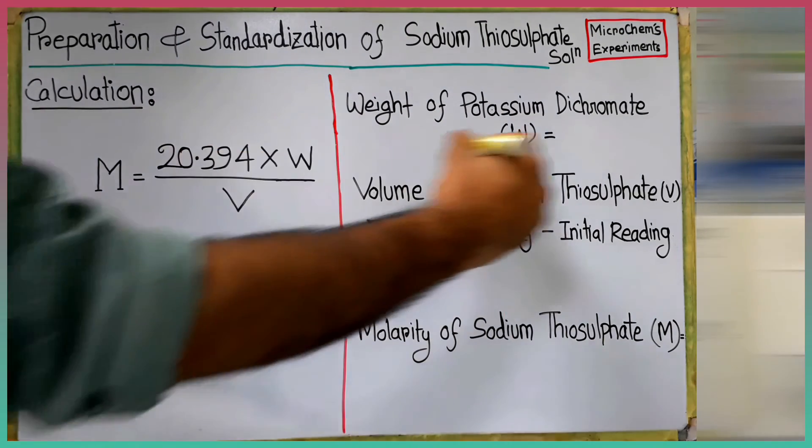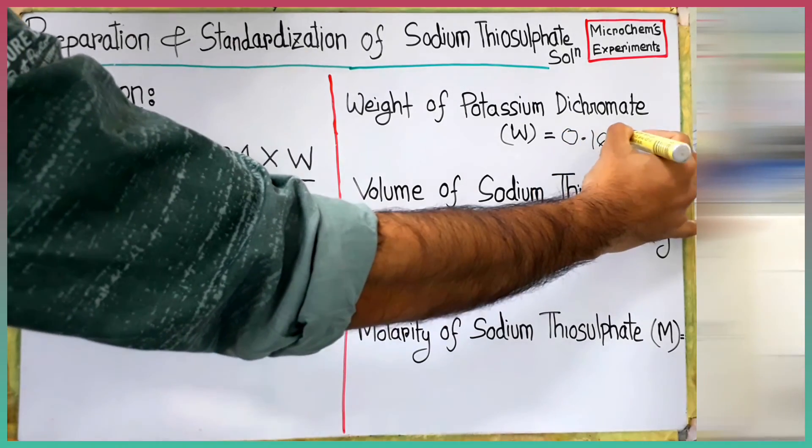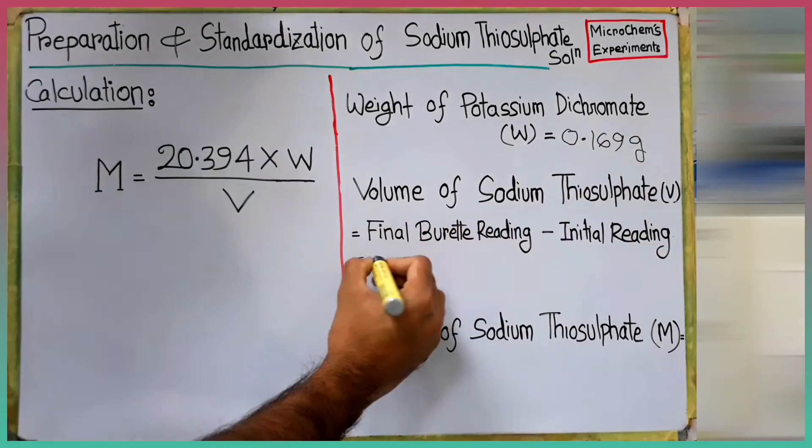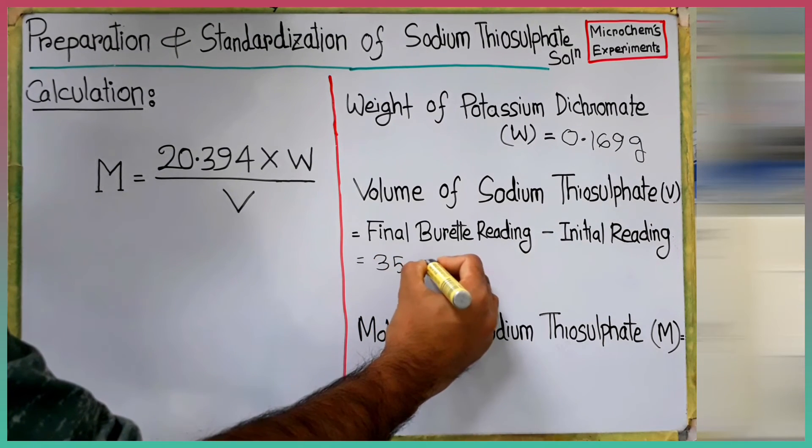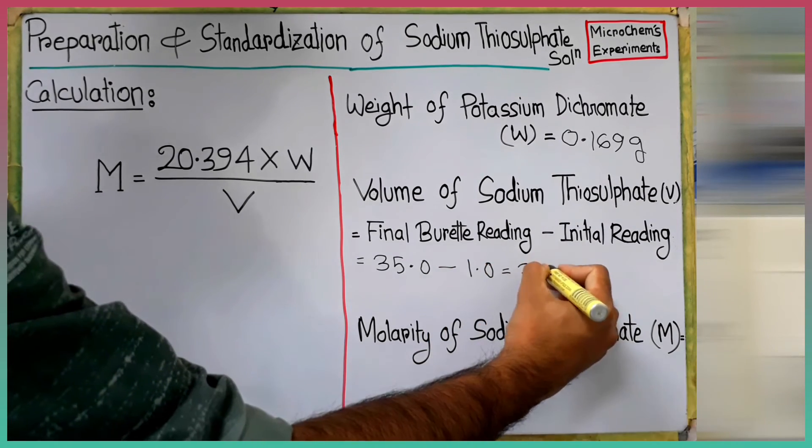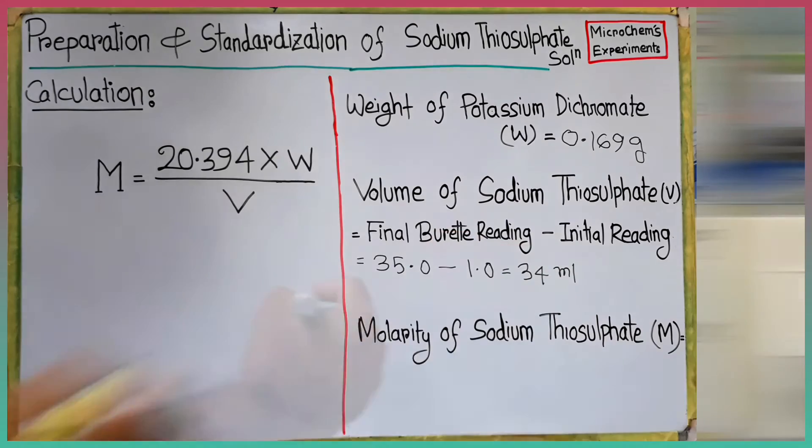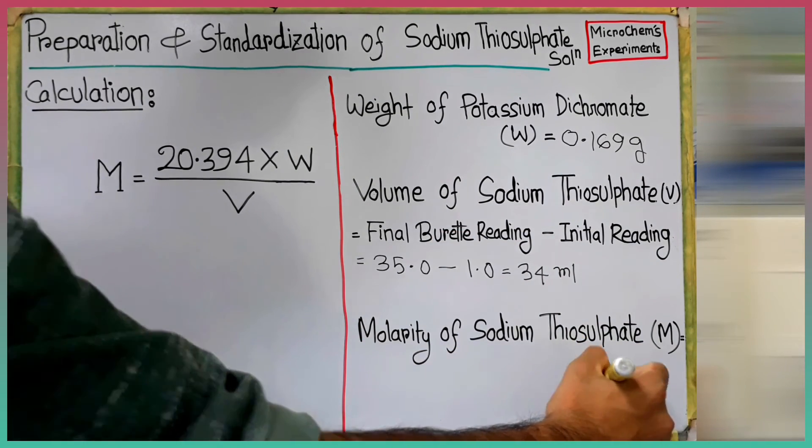It's time for the calculation. We used 0.169g potassium dichromate crystal. That's why W is 0.169g. Volume of sodium thiosulfate solution used in the titration V is final burette reading 35 minus initial reading 1, which is 34 ml.